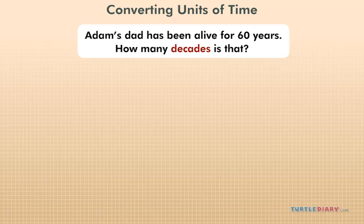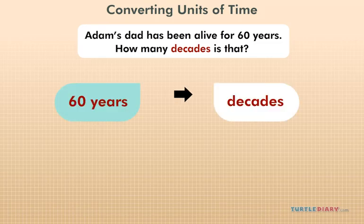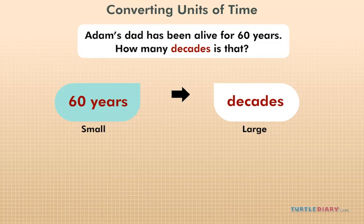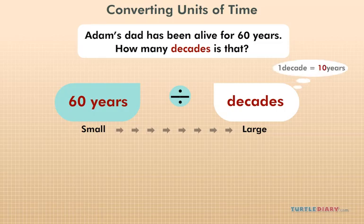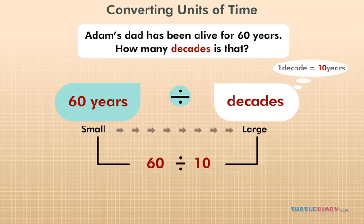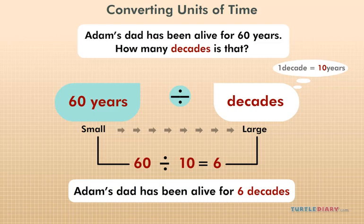Adam's dad has been alive for 60 years. How many decades is that? We are trying to convert 60 years into decades. Years are smaller than decades, so we're going from small to large. That means we must divide. Since there are 10 years in a decade, we'll divide by 10. 60 divided by 10 equals 6. Adam's dad has been alive for 6 decades.